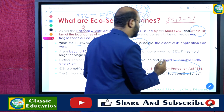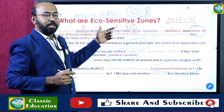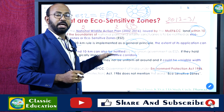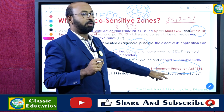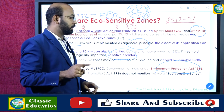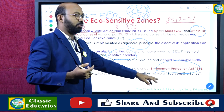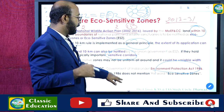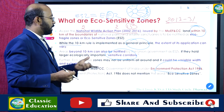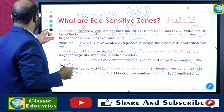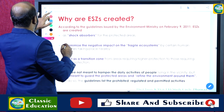ESZs are notified by the MoEFCC, Government of India, under the Environmental Protection Act of 1986. This is very important — though the guidelines are issued under this act, the act itself does not include direct reference to the term 'eco-sensitive zone.' These zones are declared under this act indirectly.